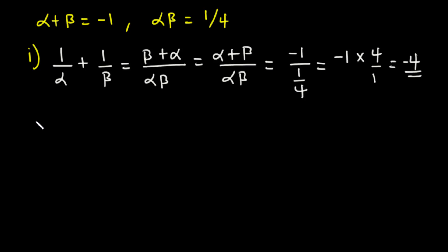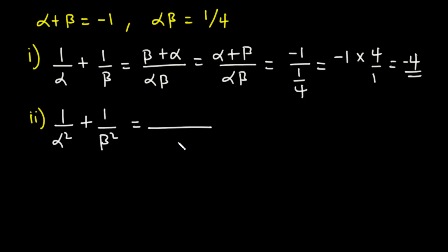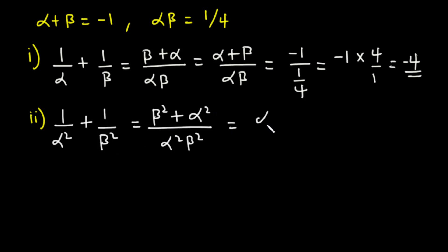Now let's solve part (ii): 1 over alpha squared plus 1 over beta squared. The LCM will be alpha squared beta squared. Dividing alpha squared beta squared by alpha squared gives beta squared, and by beta squared gives alpha squared. This simplifies to alpha squared plus beta squared, divided by alpha beta all squared.